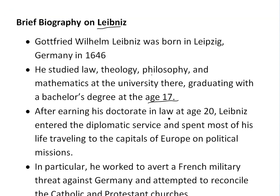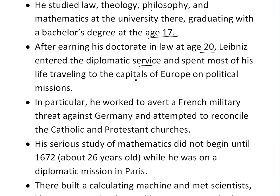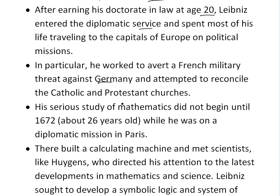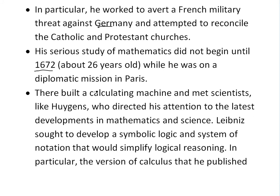After earning his doctorate in law at age 20 — once again, he's a really smart guy — Leibniz entered diplomatic service and spent most of his life traveling to the capitals of Europe on political missions, so he didn't do too much mathematics yet. In particular, he worked to avert a French military threat against Germany, and he even attempted to reconcile the Catholic and Protestant churches. His serious study of mathematics did not begin until 1672, when he was about 26 years old, while on a diplomatic mission in Paris.